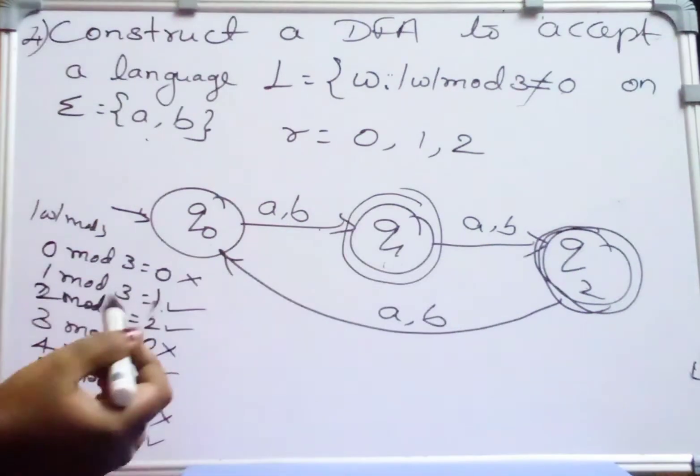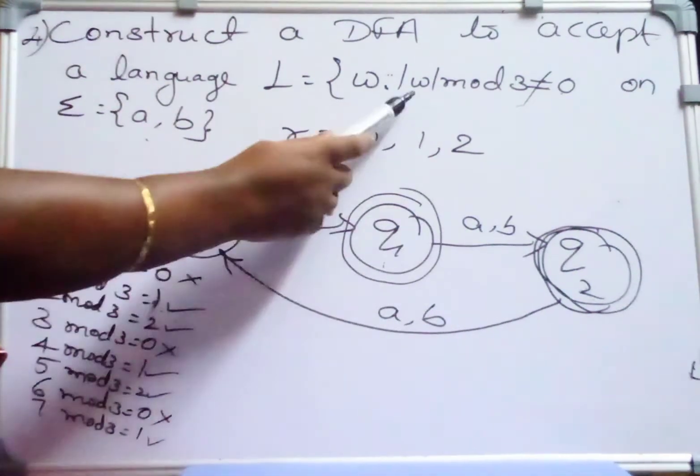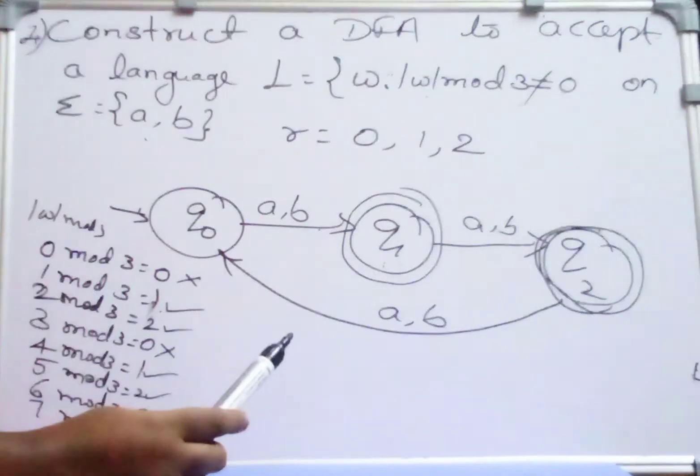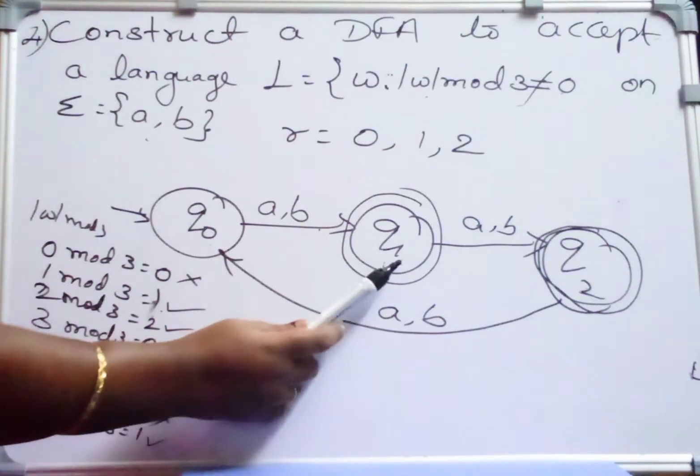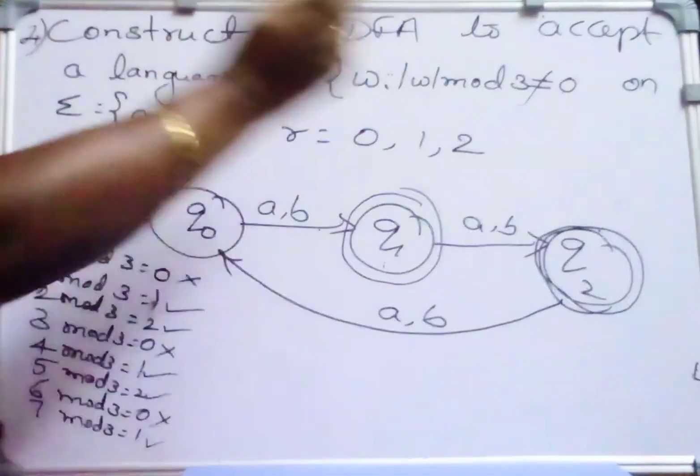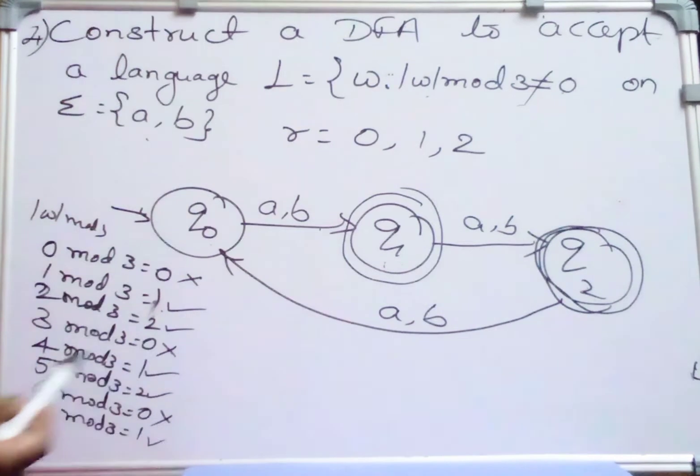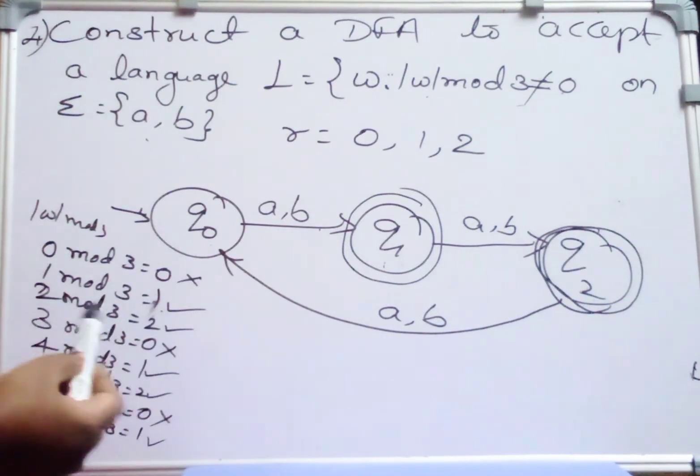Q1 and Q2 are our final states which accept the language L equal to W where W mod 3 is not equal to 0. In this state Q1 and Q2, the remainder is not equal to 0, so this is our final state. Hope you have understood.